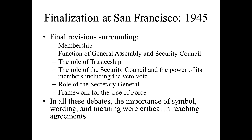One of the things that finally got both the Soviets and the Americans to sign on was the blackball veto, giving the United States a unique position — along with four other countries — in shaping, designing, and pressuring foreign policy. In all of these debates from Tehran to Dumbarton Oaks to Yalta to San Francisco, all of these meetings included discussions on the important use of symbols, wording, and meaning — all of them critical in reaching agreements. Not just in making certain the UN Charter was clear, but making certain that the great powers continued to cooperate.